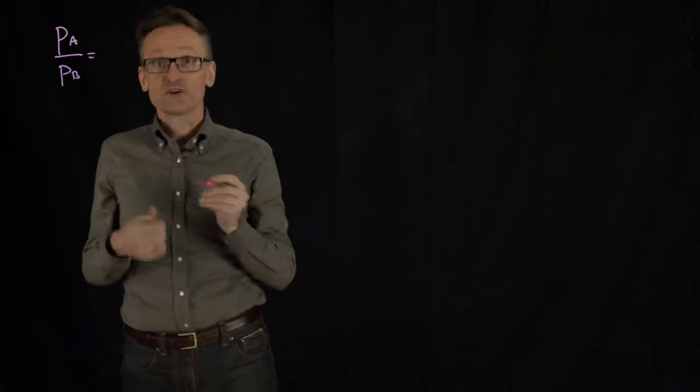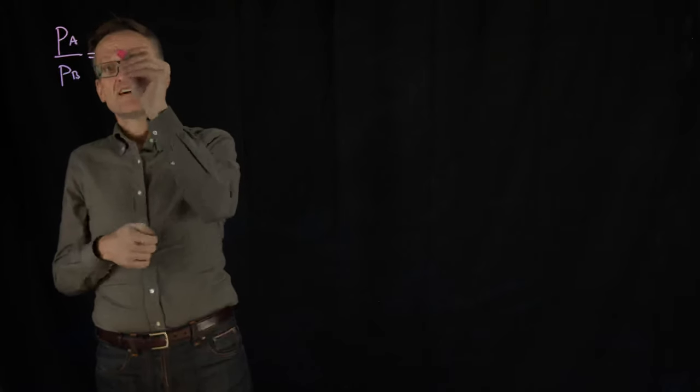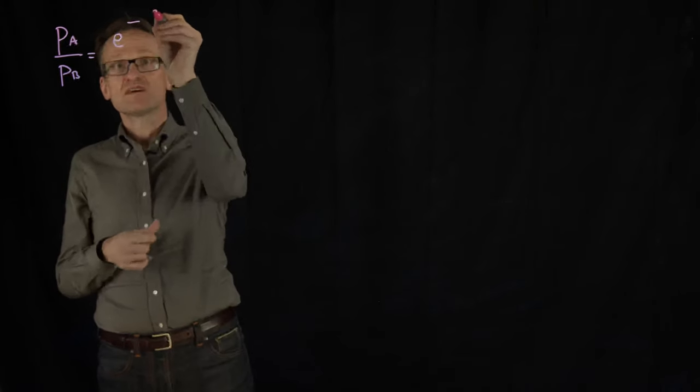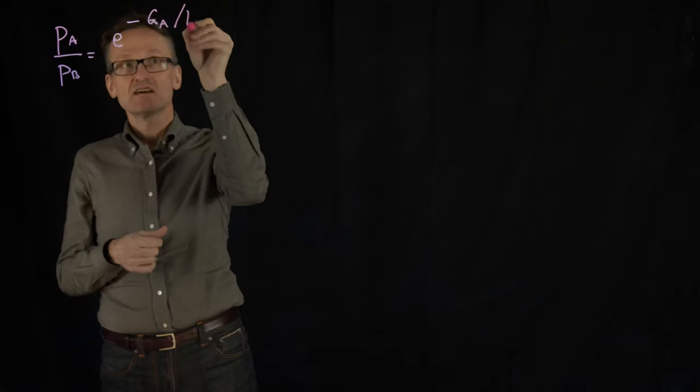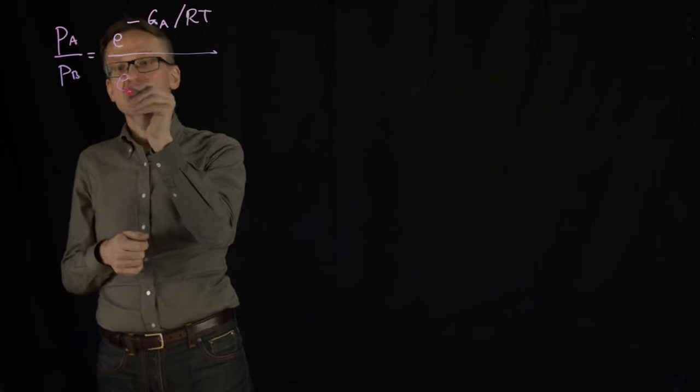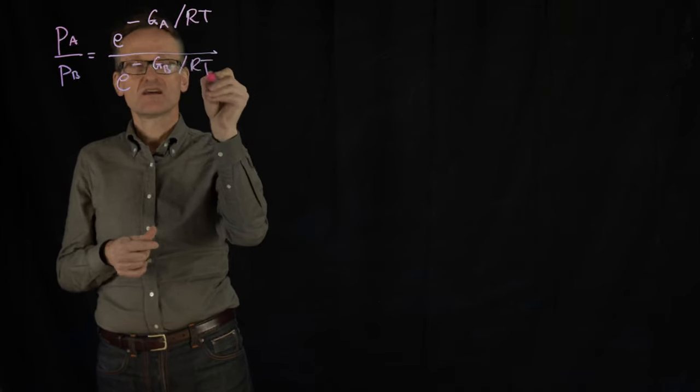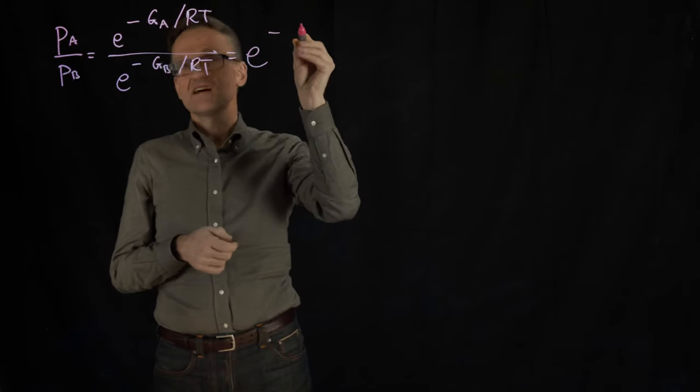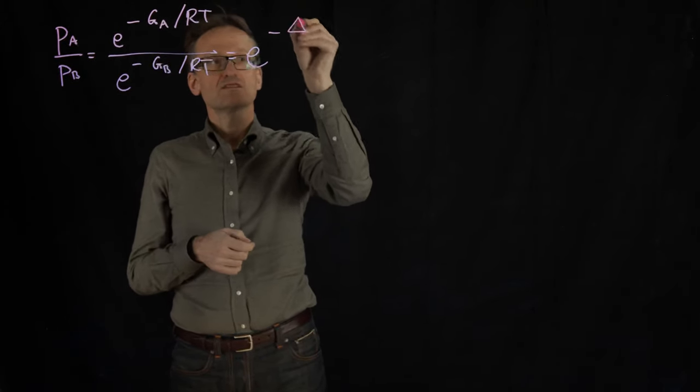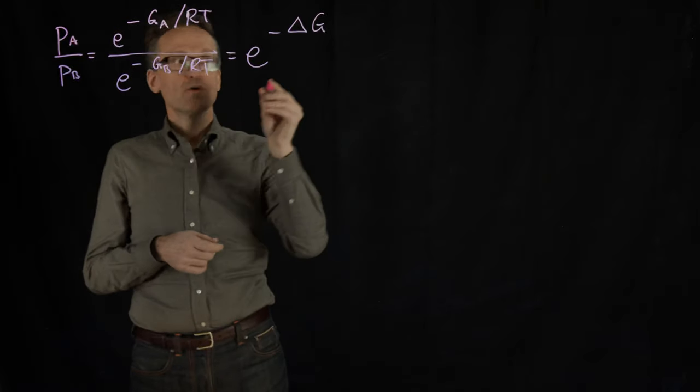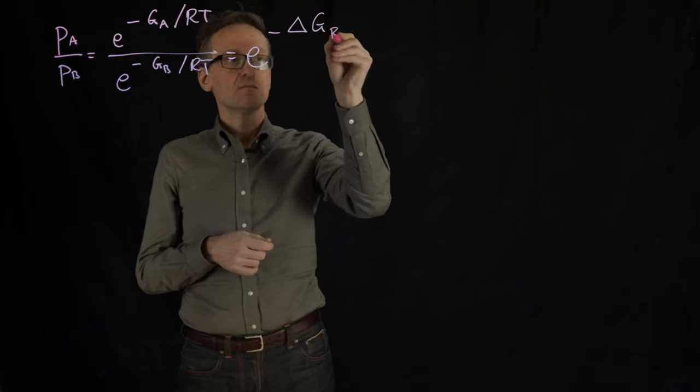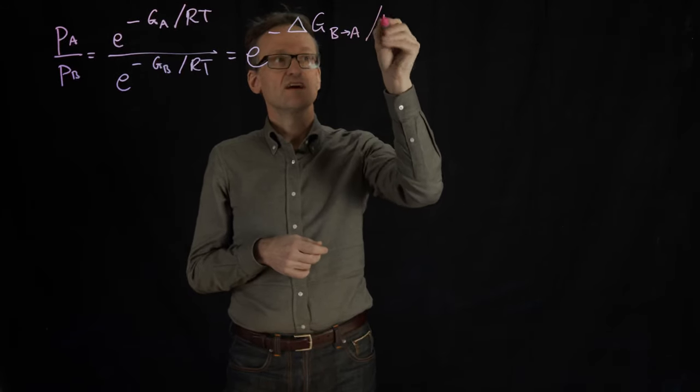So if I have a state A and a B, I could then say that the probability of being in A relative to the probability of being in B - you know that, you're going to use the Boltzmann distribution. That corresponds to e raised to minus GA divided by RT (we're going to be chemists today) divided by e raised to minus GB divided by RT, which we can write as e raised to minus delta G when going from B to A divided by RT.